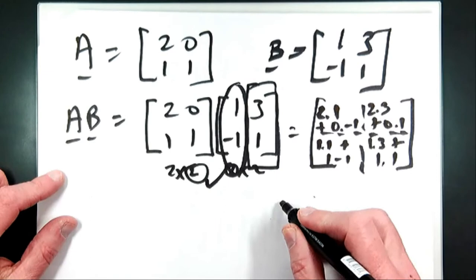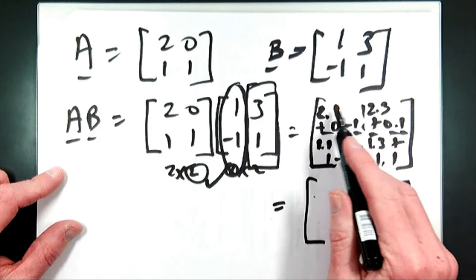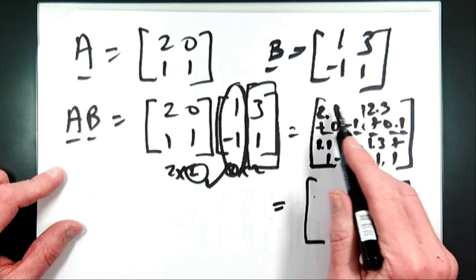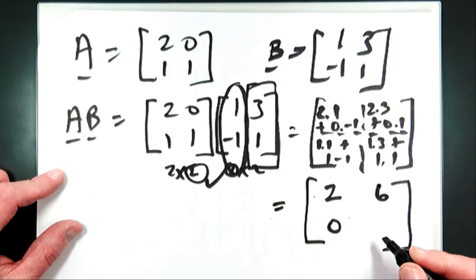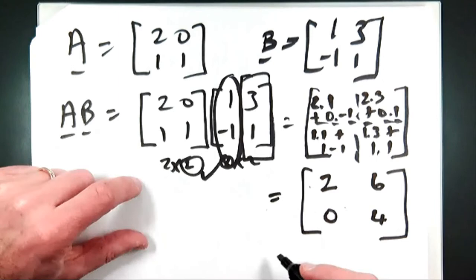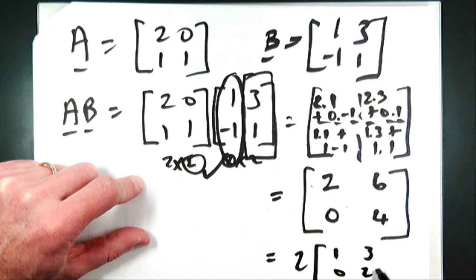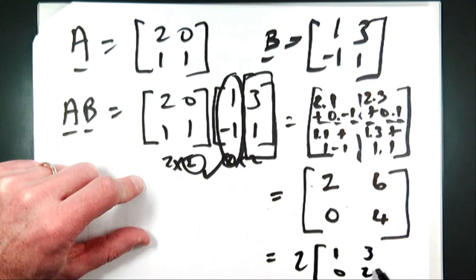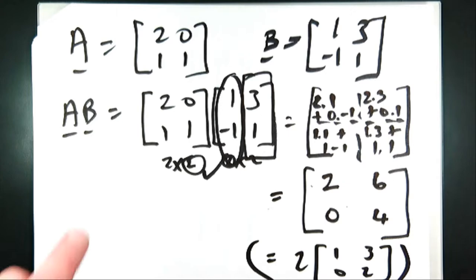So when you do the addition: 2×1 is 2 plus 0, which is 2; then 1 plus (−1), which is 0; then 6 plus 0, which is 6; and then 3 plus 1, which is 4. So AB = [2, 6; 0, 4]. Because there's a common factor of 2 in each entry, you can bring the 2 outside if you want to and write 2×[1, 3; 0, 2], but you don't have to — that's optional.